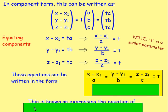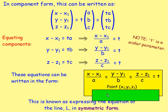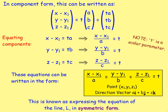This is known as expressing the equation of line L in symmetric form: (X − X1)/A = (Y − Y1)/B = (Z − Z1)/C. X, Y, and Z stay as variables. The values X1, Y1, Z1 come from a random point on the line, and A, B, C come from the direction vector U = AI + BJ + CK. Let's try some examples.